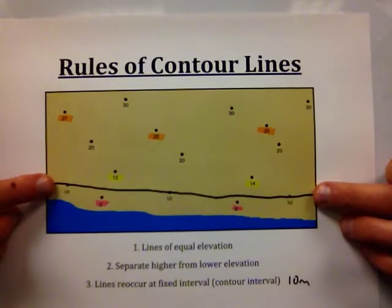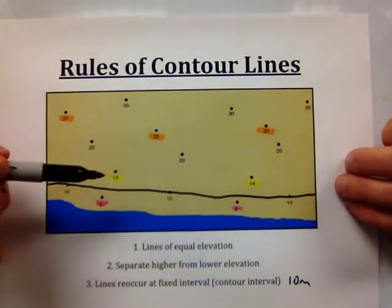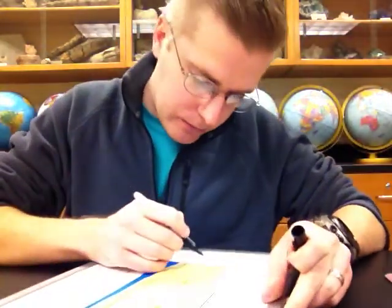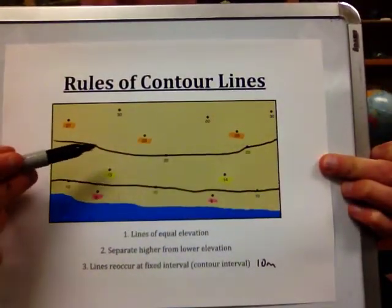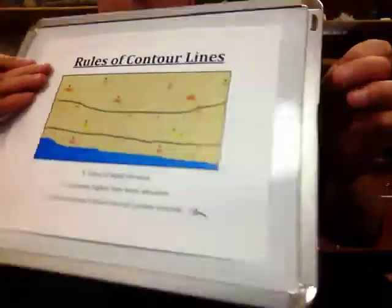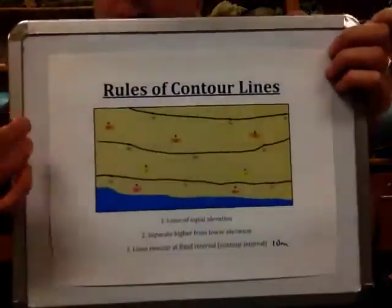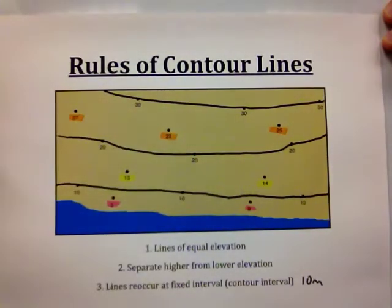Following our contour interval of 10 meters, because this line is at 10 meters, our next one has to be at 20 meters. We want to separate everything highlighted in yellow from everything highlighted in orange. So we draw the contour line for 20. Now everything between the contour lines for 10 and 20 has elevations between those numbers. Our next line is 30, and everything between the lines for 20 and 30 has an elevation between 20 and 30 — the orange highlighted points. These are the first three rules to follow when drawing contour lines.